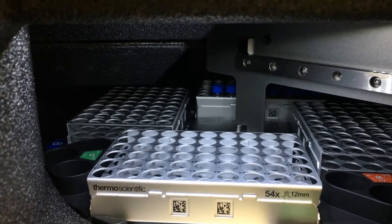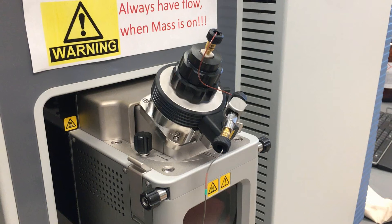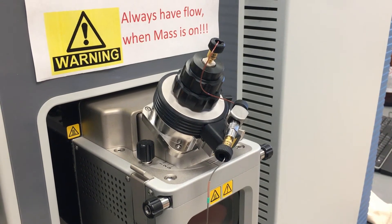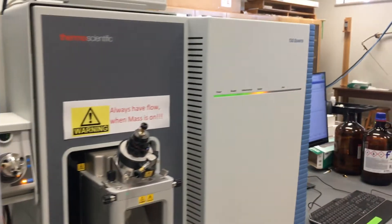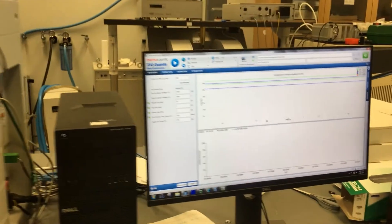For structural mass spec, a common sequence is product ion scan, precursor ion scan, and neutral loss scan, followed by selected reaction monitoring (SRM) or multiple reaction monitoring (MRM).